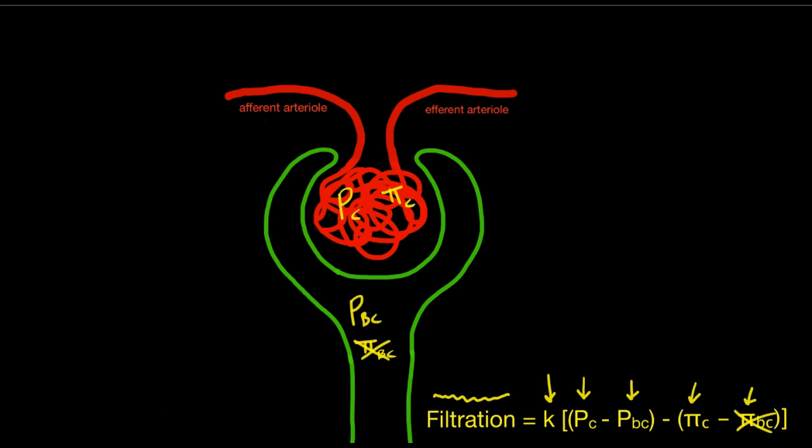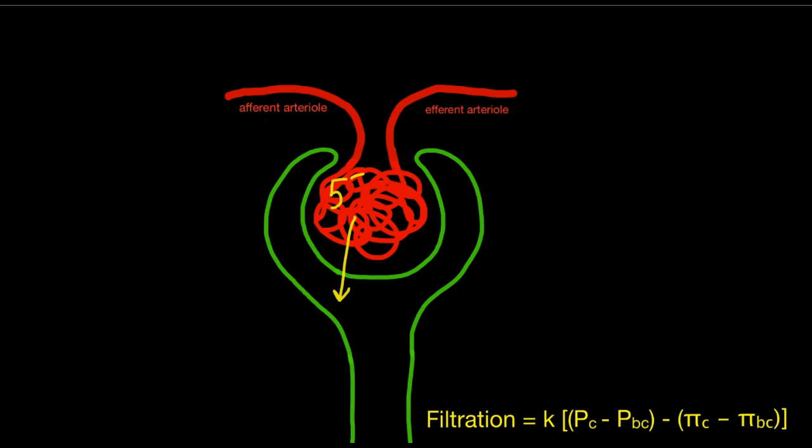For the glomerulus, filtration is dependent on the pressure difference between capillaries and Bowman's space, and the oncotic pressure of the capillaries. Assuming normal blood pressure, as blood passes through the afferent arterioles — the major resistance vessels — the pressure in the glomerulus is significantly reduced from the mean arterial pressure. In the normal range, the pressure in the glomerular capillaries is somewhere around 55 millimeters of mercury.